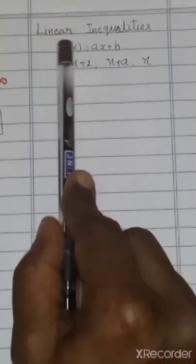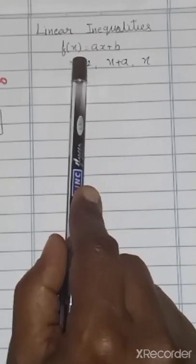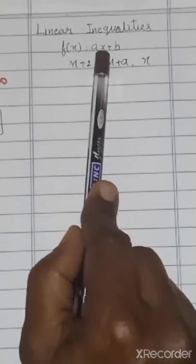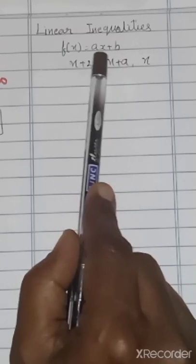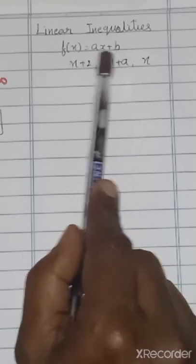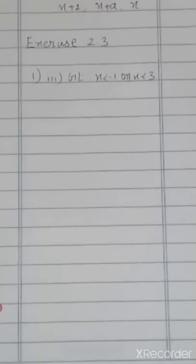Last exercise we saw absolute value. Here, we are going to solve linear inequality. What is a linear function? Your x power should be 1. If x power is more than 1, that is called a quadratic equation. This exercise, we are going to solve only linear inequality.